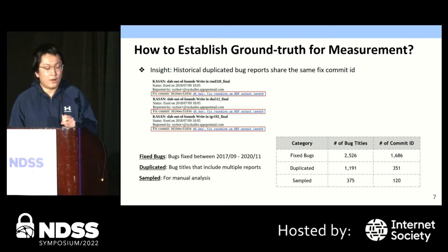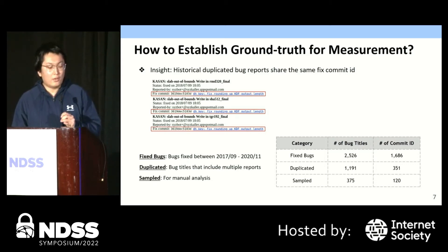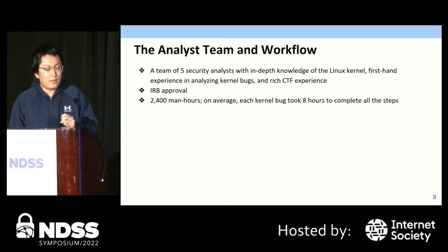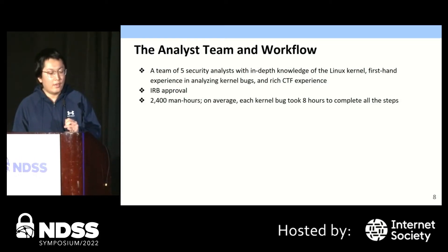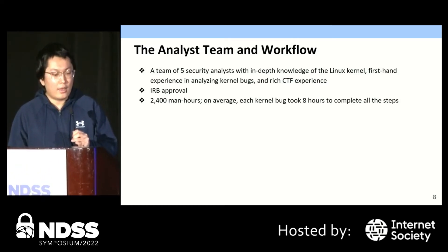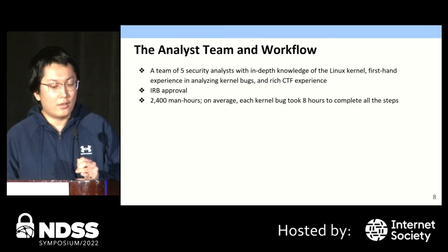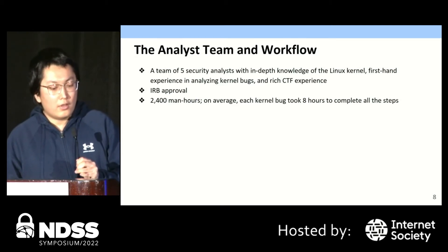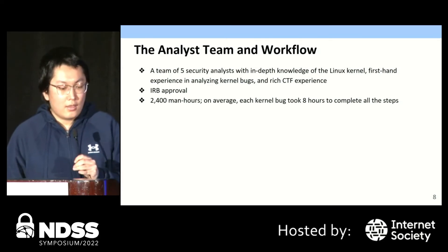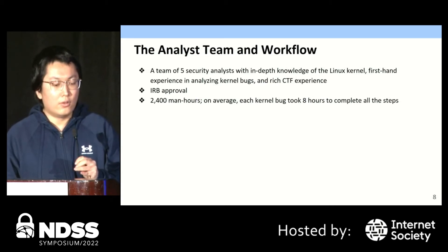In total, we collect reports from over 10,000 bug titles that are fixed within a certain time window. Among these bug titles, we discovered that over 1,000 bug titles include duplicate bug reports. From these bug titles, we sampled over 300 bug titles for manual analysis. As the analysis requires a high level of expertise in kernel security, we built a professional team of five security analysts, all with in-depth knowledge of the kernel and first-hand experience in bug analysis and exploitation. We further got IRB approval for the analysis. It took us over 2,000 man-hours in total, and on average every kernel bug took eight hours to complete the whole analysis procedure.